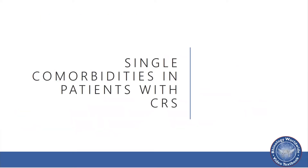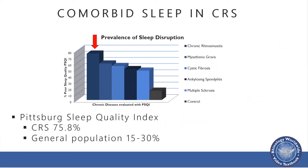Now let's transition to looking at more specific single comorbidities in patients with CRS. The overall prevalence of sleep disruption or poor sleep quality using the Pittsburgh Sleep Quality Index shows that patients with CRS have a prevalence of 75 to 78% presenting with sleep dysfunction, compared to 15 to 30% found in the general population. Other chronic inflammatory diseases show similar or lower levels of sleep dysfunction compared to CRS.